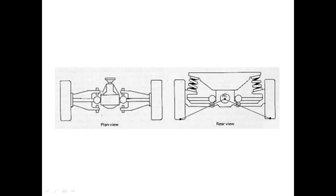This is the top view of the front and back wheel, and this is the rear view showing the pivot. This is the swing arm suspension system. The back wheel is rotated and the axle is rotated. That type of suspension system is the swing-on suspension system.